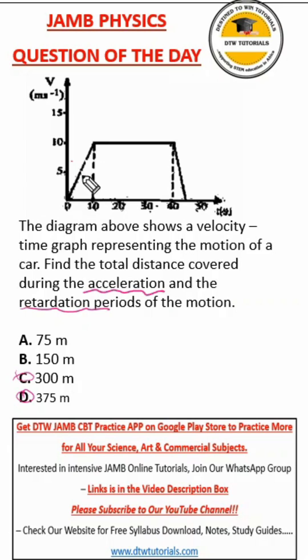So where is the acceleration period? This, here, from here to here is the acceleration. Why from here to here is what? Retardation. So you can see this covers like a triangle. This also covers like a triangle. So we ask you to find the area of this triangle, the area of this triangle, then add it up.